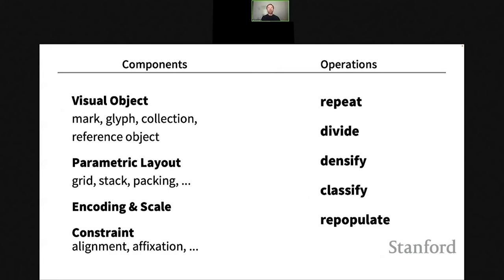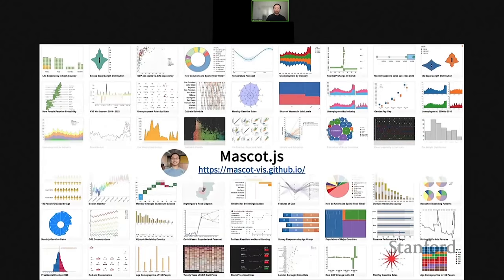We worked with designers one hour per week and asked them to use their favorite tools — Adobe Illustrator or Figma — to create visualizations we gave them. Based on their workflows, we came up with around 40 different storyboards and mockups and distilled these into a set of components and operations. We have visual objects including marks, glyphs, collections, and reference objects; parametric layouts for positioning items using automated layouts like grid and stacking; encodings and scales central to data visualization; and graphical constraints like alignment and fixation.